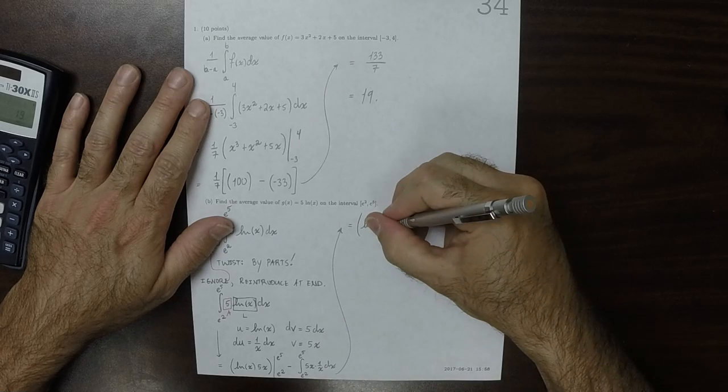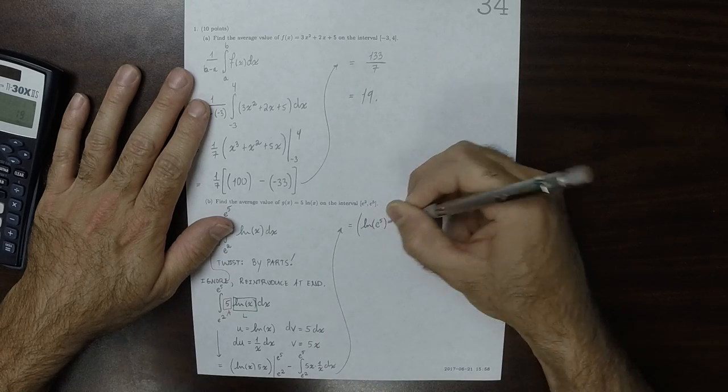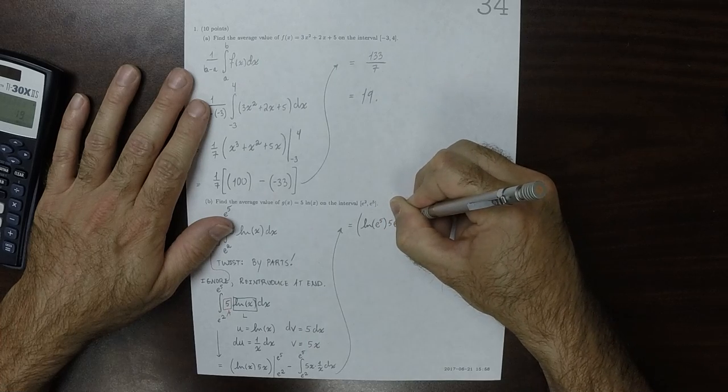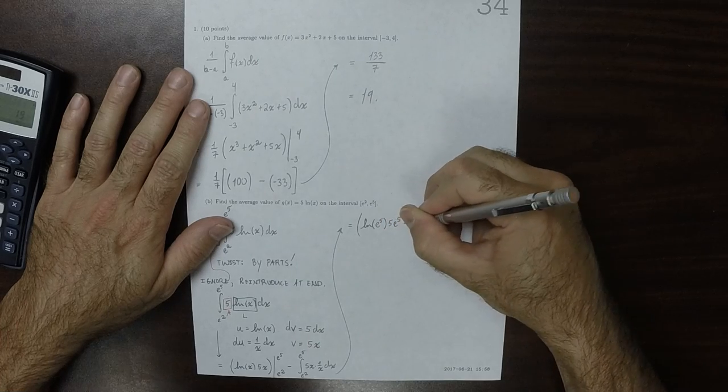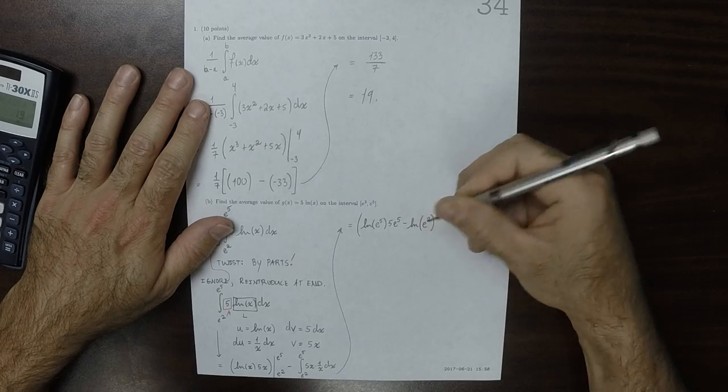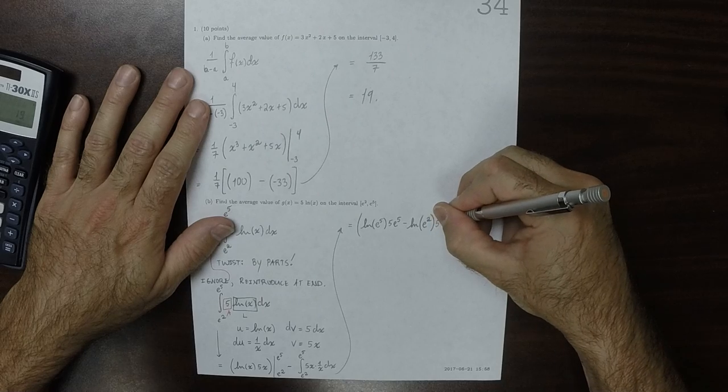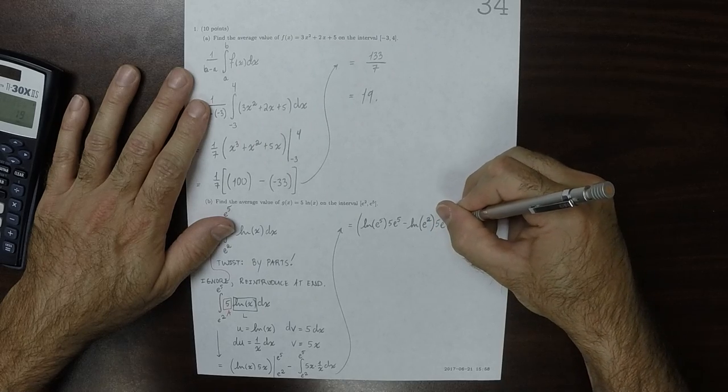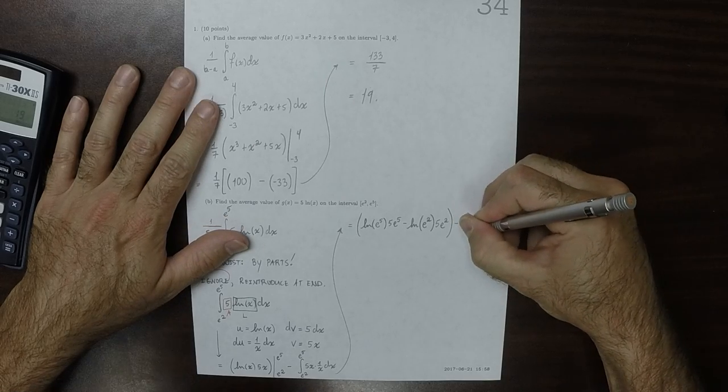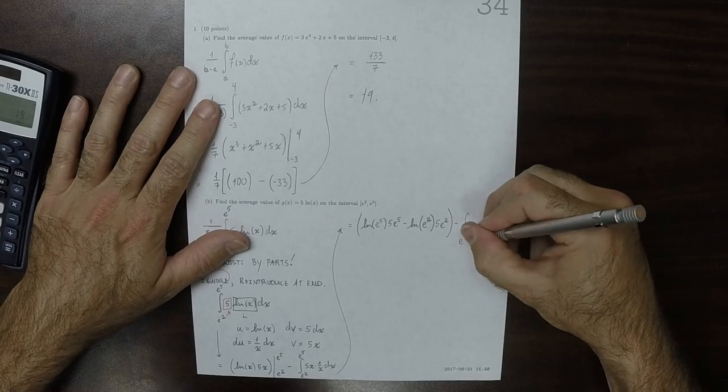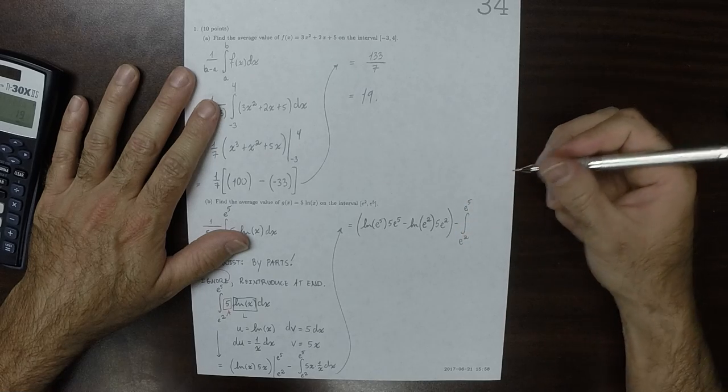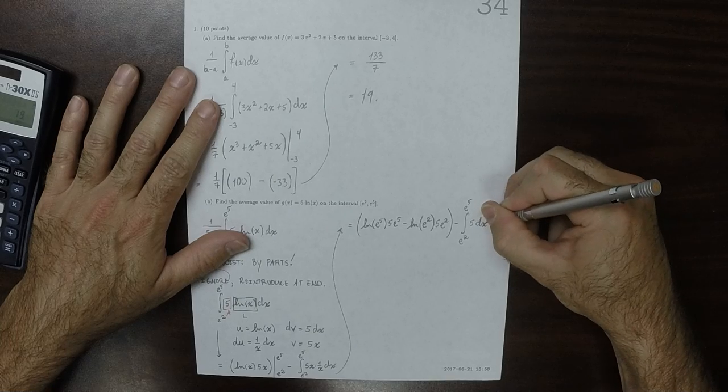I guess I'll go ahead and plug stuff in. So log of e to the 5, and then 5e to the 5, minus log of e to the 2, 5e to the 2, and then minus integral e to the 2 to e to the 5, 5 dx.